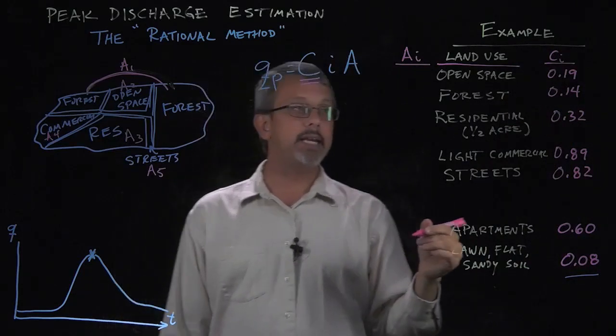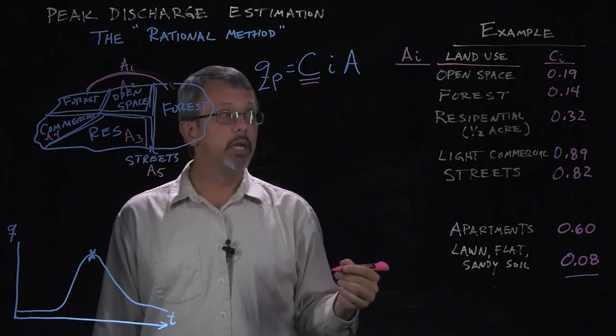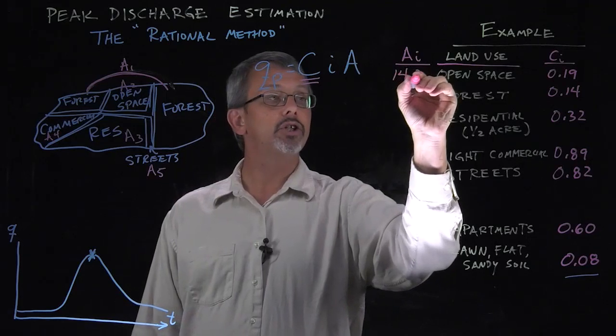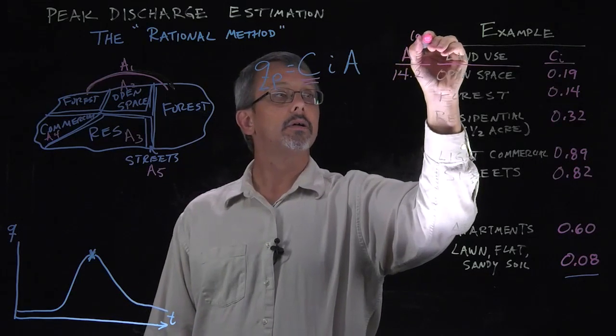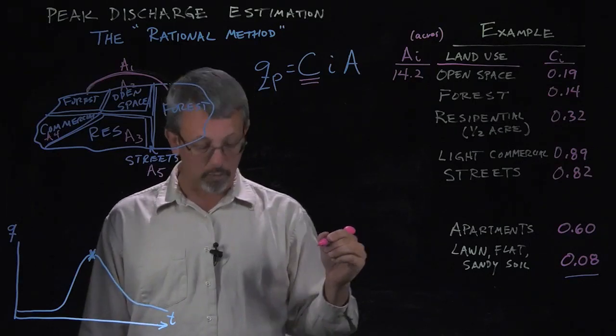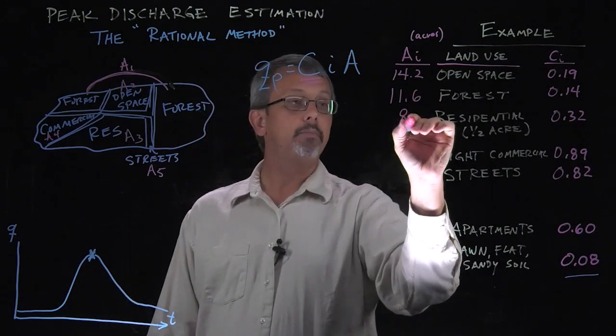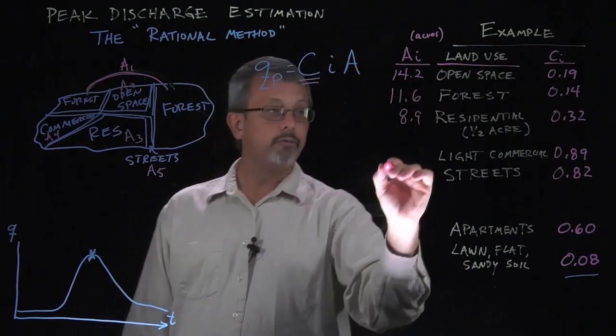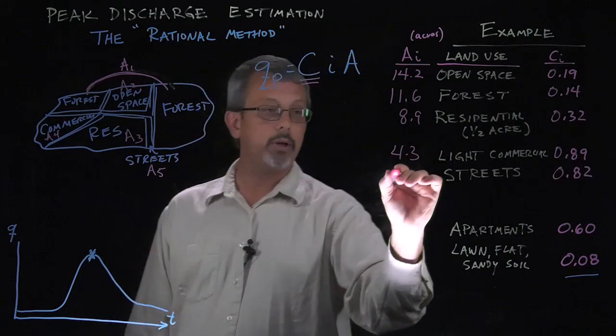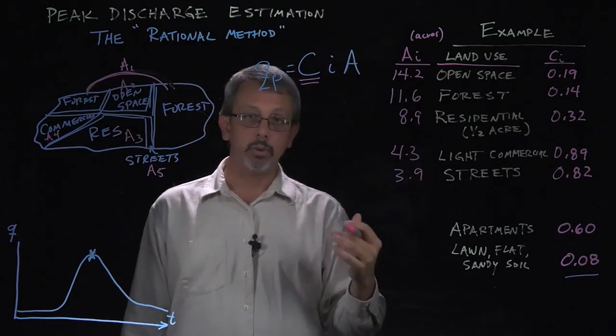Maybe open space is one, forest is two, residential is three, and so on and so forth. So we have the different coefficients, and let's assume that we measure the acreage associated with each of these. For example, 14.2 acres of open space, 11.6 acres of forest, 8.9 acres of residential, 4.3 acres of light commercial, and 3.9 acres of street. So there are different values associated with each of these different areas.